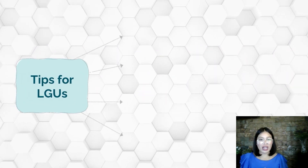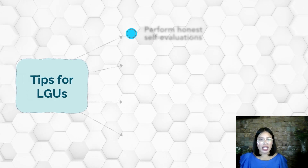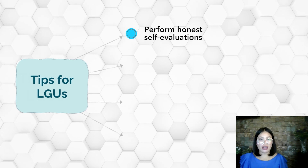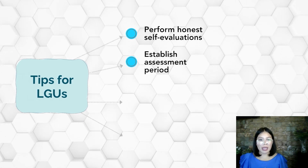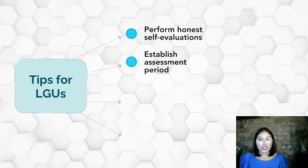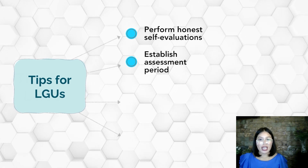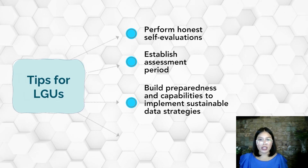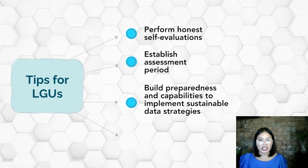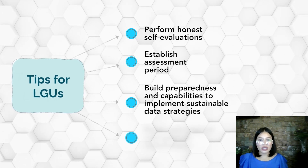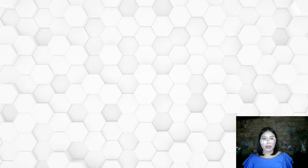Tips to achieve a higher level of data maturity. First, LGUs must perform a really honest self-evaluation. Next, there should be an established assessment period so we have target dates for implementation of improvements. Third, LGUs must build preparedness and capabilities to implement sustainable data strategies. And fourth, LGUs must really work well with internal and external stakeholders.